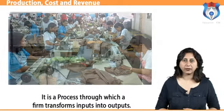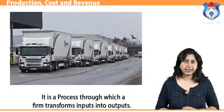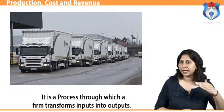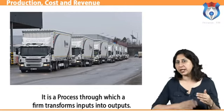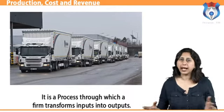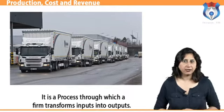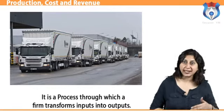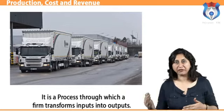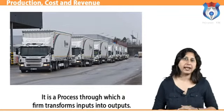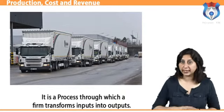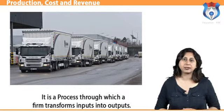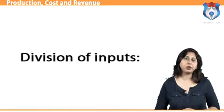A production process can be called efficient if another process produces the same level of output using one or more inputs, other things remaining constant. However, if a production process uses less of some inputs and more of others, the economically efficient method of producing a given level of output depends on the prices of inputs.